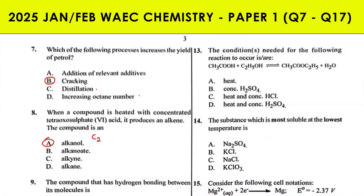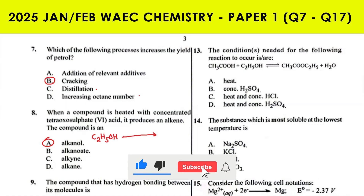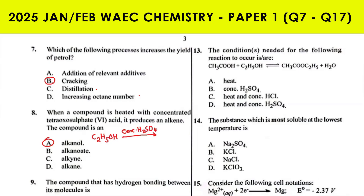For example, C₂H₅OH — ethanol — reacting with concentrated H₂SO₄ at about 170 degrees Celsius will give us C₂H₄ plus H₂O. This is a dehydration reaction, and it gives us an alkene — in this case ethene. Ethanol undergoes dehydration to give us ethene in the presence of concentrated H₂SO₄ and high temperature.